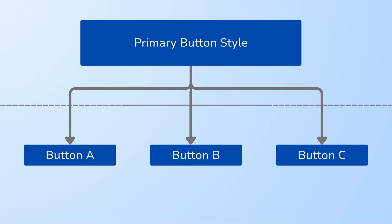If we change one of the properties of the style — for example, changing the background color to orange — then all of the elements that are assigned to the style will also have their background color changed.